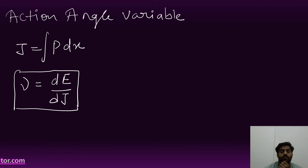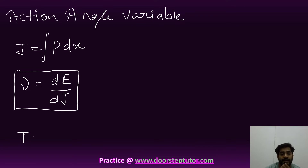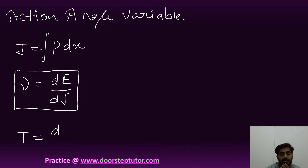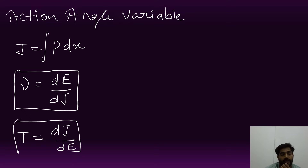We know that frequency is universally proportional to time period, or frequency is the reciprocal of time period. So we can write the time period as dJ/dE. Now, how do we find J in previous year questions?